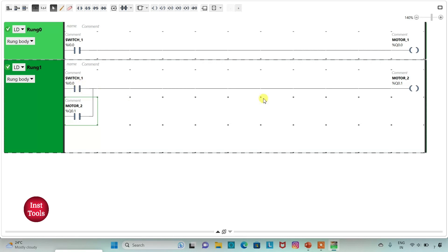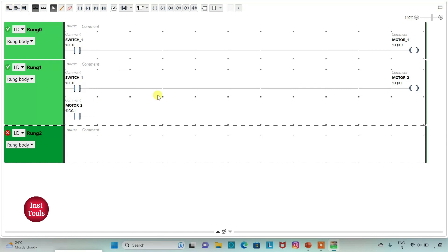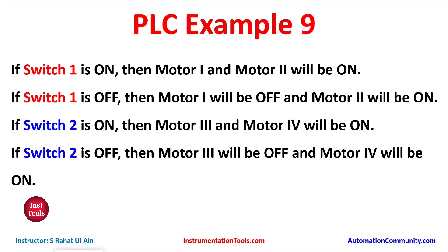So when I turn ON SW1, MOTOR2 will be ON, and then when I turn OFF SW1, MOTOR2 will remain ON. Then I will add a new rung. If SW2 is ON then MOTOR3 and MOTOR4 will be ON, and if SW2 is OFF then MOTOR3 will be OFF and MOTOR4 will be ON — so in this case I will latch MOTOR4.